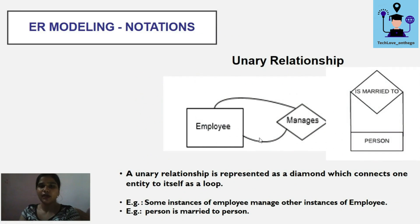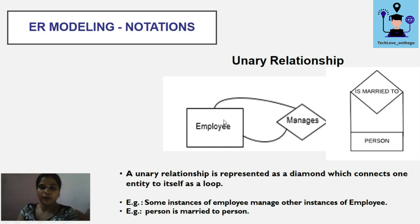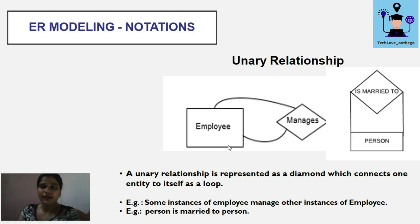Let's see an example of a unary relationship. The entity set is 'employee' and the relationship is 'manages' — employee manages employee. Only one entity is participating, which is employee. Another example: a person is married to a person. At one point in time, only one person can marry one other person, so only one entity is participating — this is also a unary relationship.